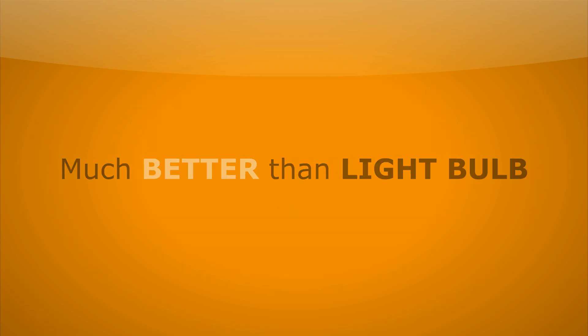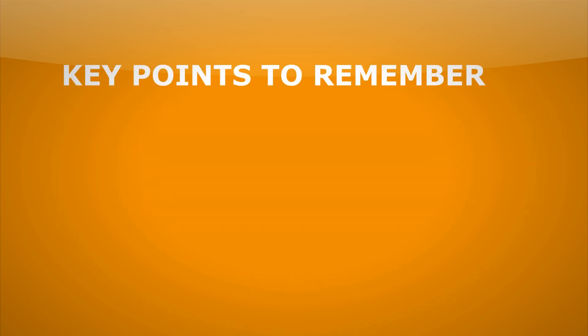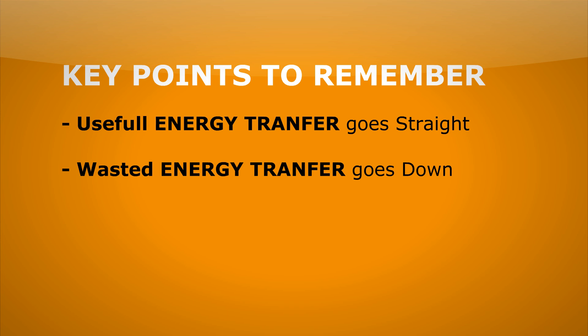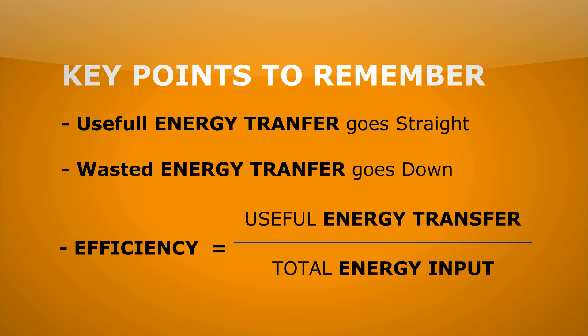The important information to remember here is that in a Sankey diagram, useful energy transfers go straight on, and wasted energy goes down. We also have our efficiency equation: useful energy transferred divided by total energy input.